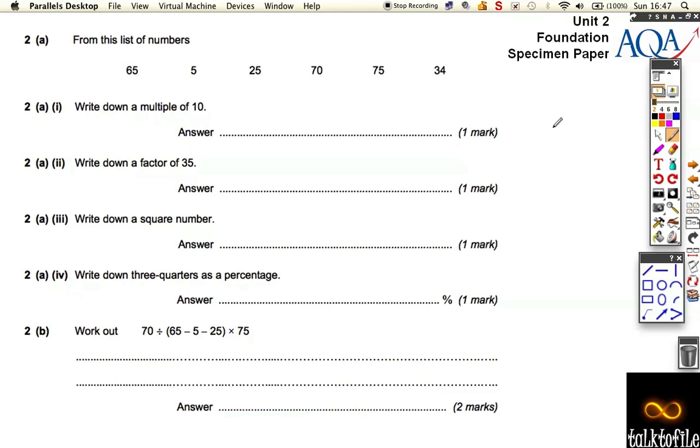From this list of numbers, we need to write down a multiple of 10. Well, that's obviously 70. It's in the 10 times table.